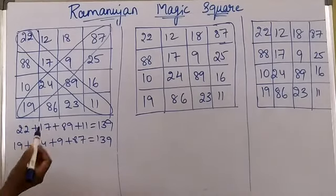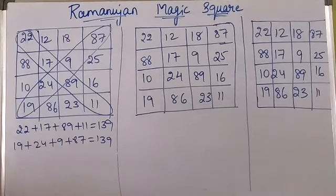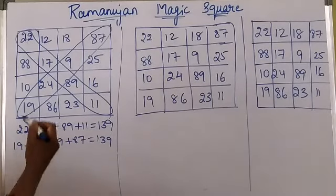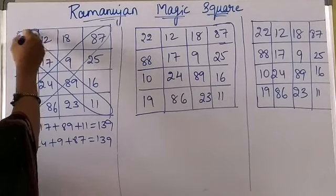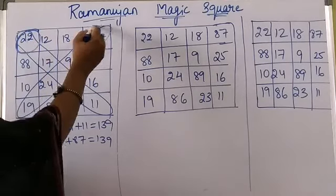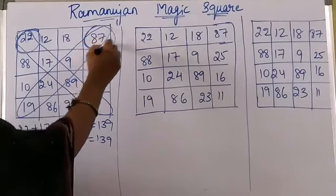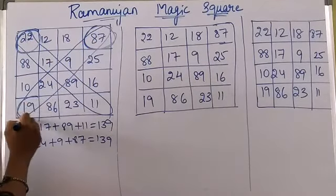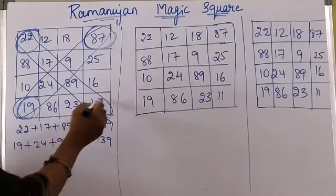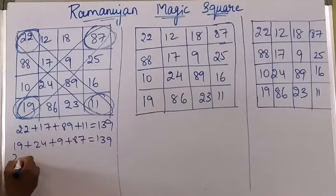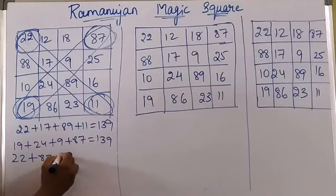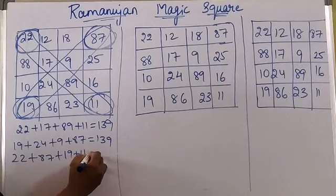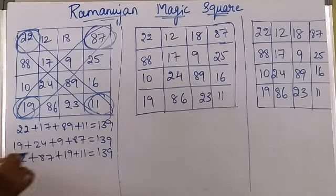Now we will see another way — the sum of corner numbers. The corner numbers are 22, 87, 19, and 11. When you add 22 plus 87 plus 19 plus 11, you will also get 139.